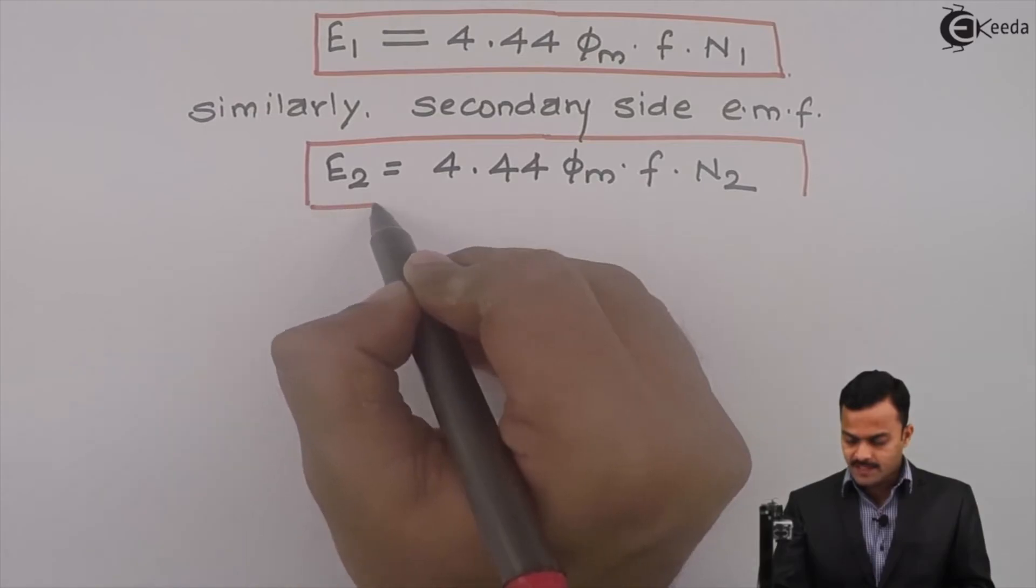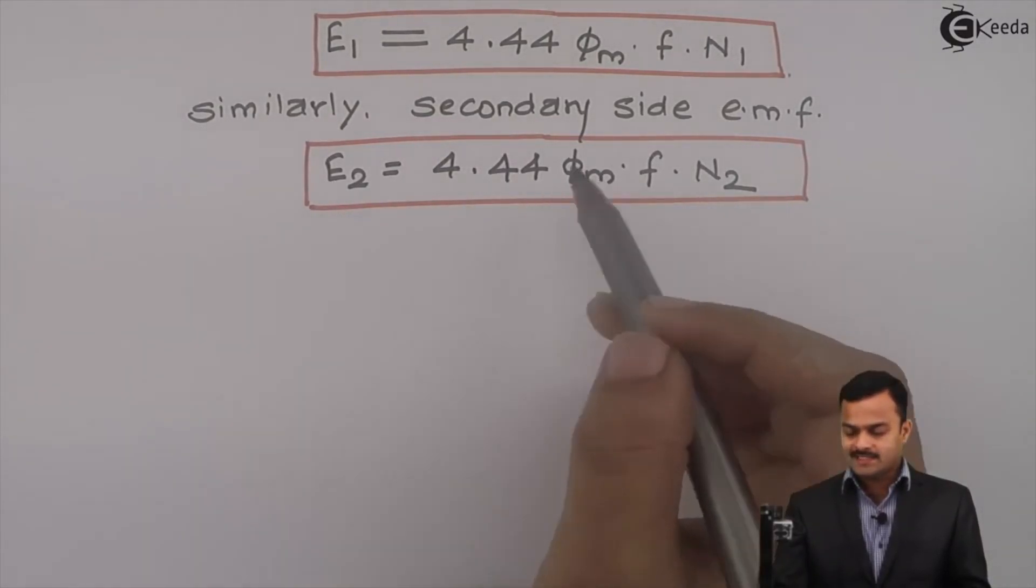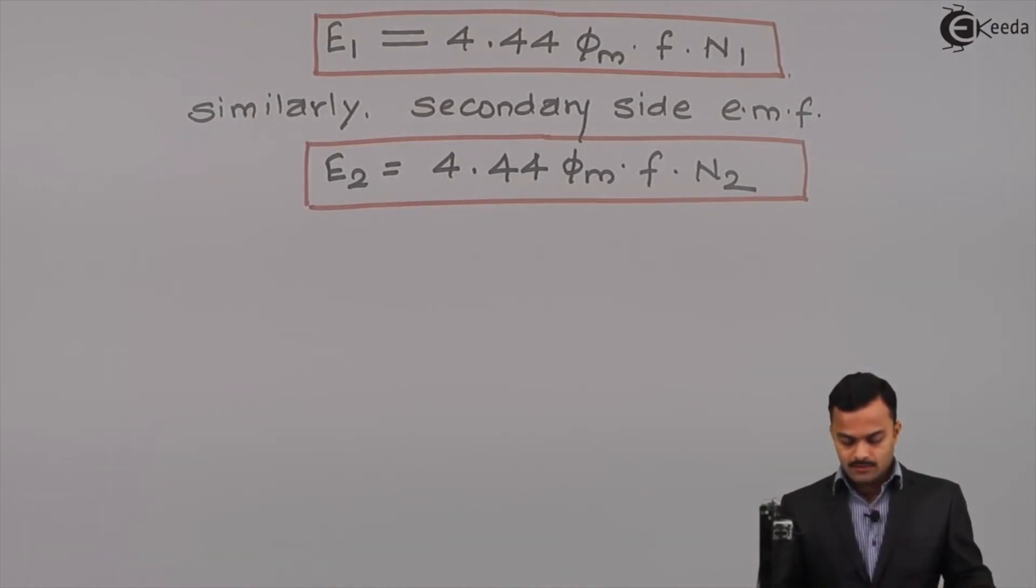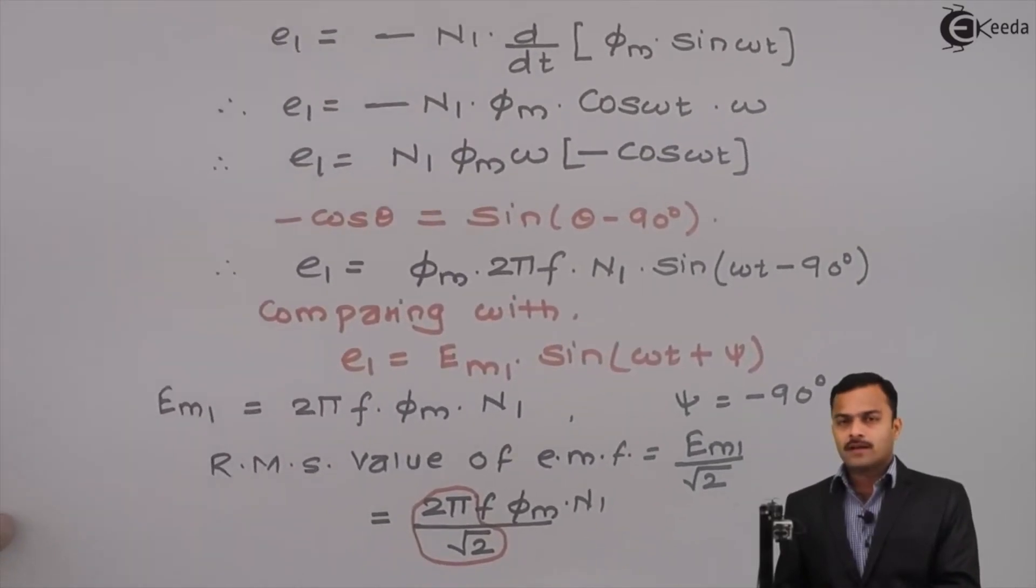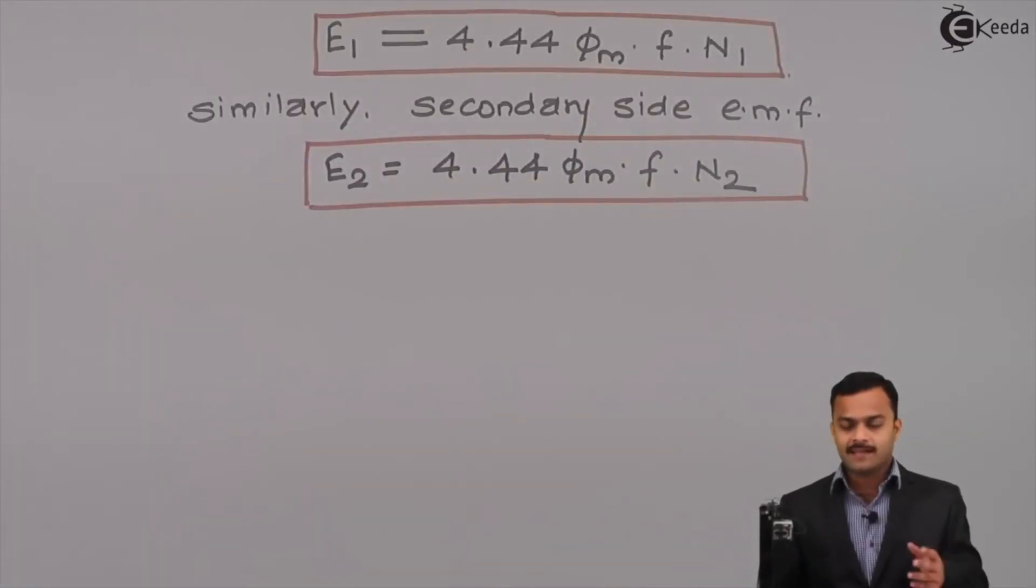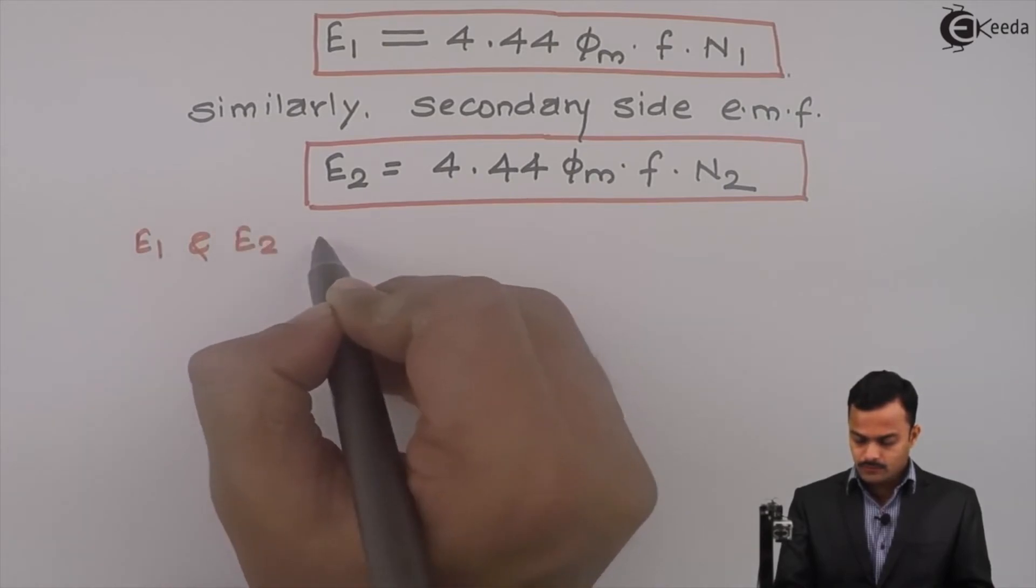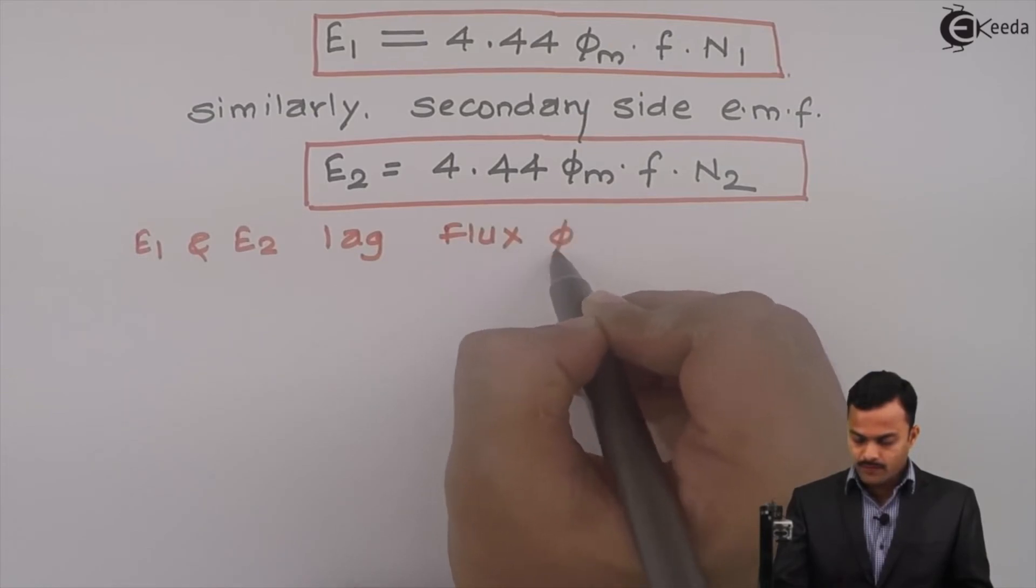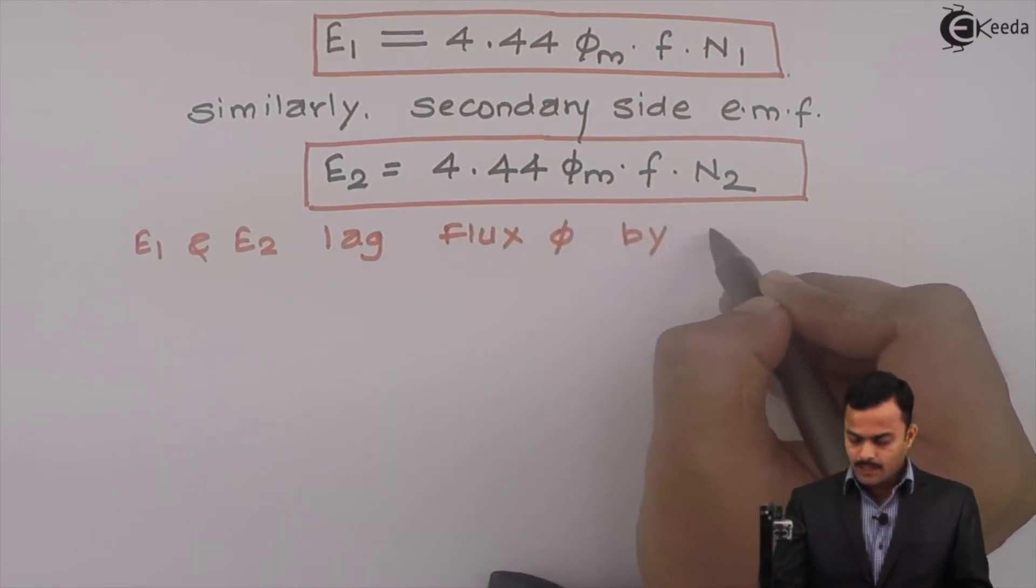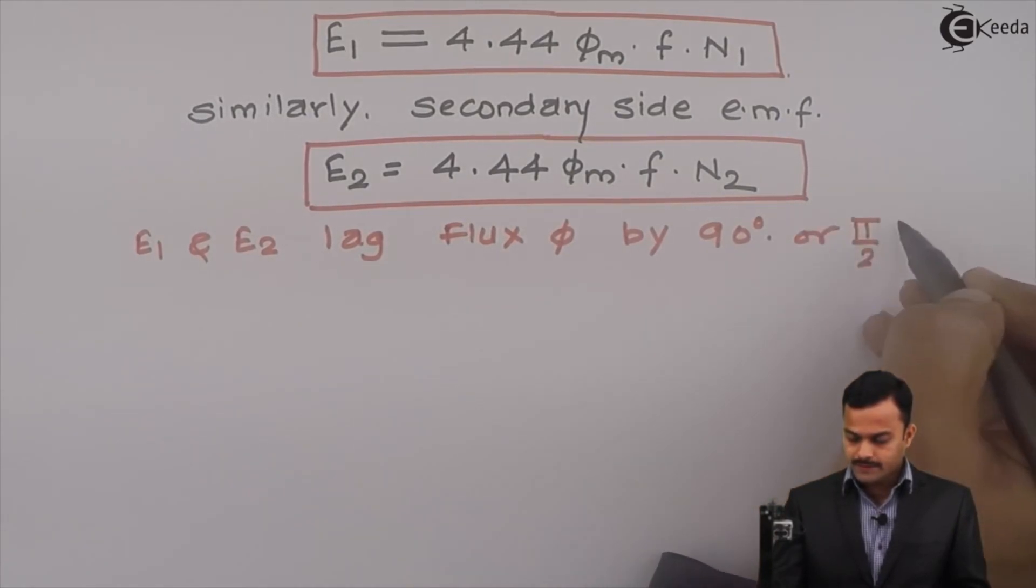That will depend only on secondary number of turns. Flux phi will be same because EMF induced over here is because of mutual induction, and we have got angle minus 90 degrees with respect to flux waveform. Minus 90 means it is lagging. I can write a statement: E1 and E2 lag flux phi by 90 degrees or pi by 2 radians.